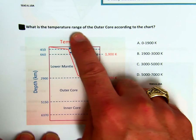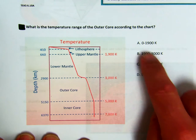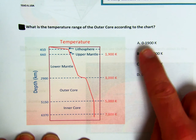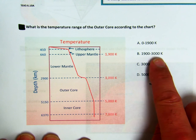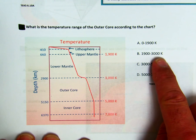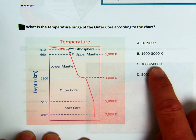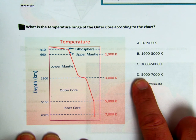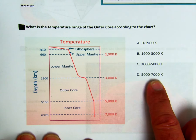What is the temperature range of the outer core according to the chart? Is it A, between 0 and 1,900 Kelvin? B, between 1,900 and 3,000 Kelvin? C, between 3,000 and 5,000 Kelvin? Or D, between 5,000 and 7,000 Kelvin?